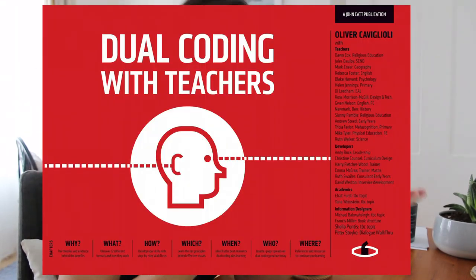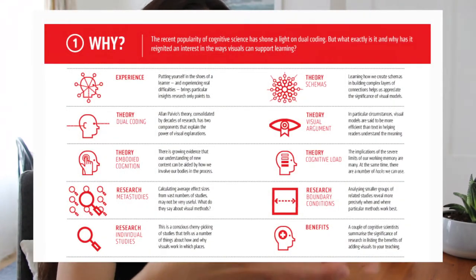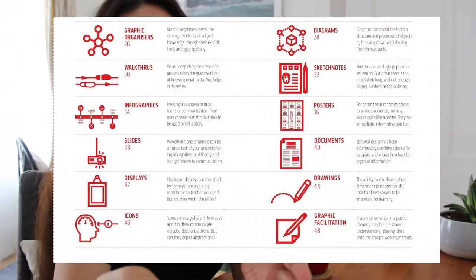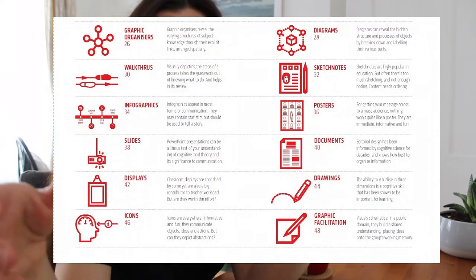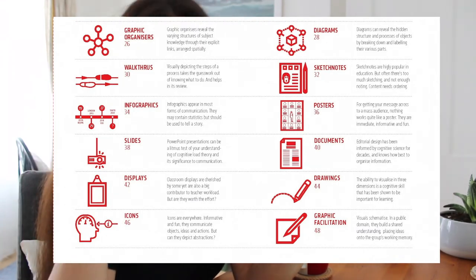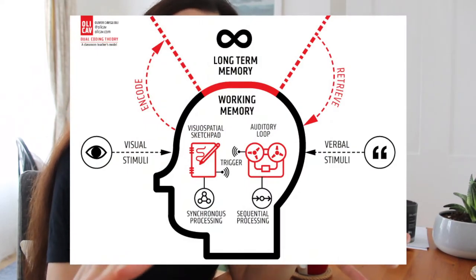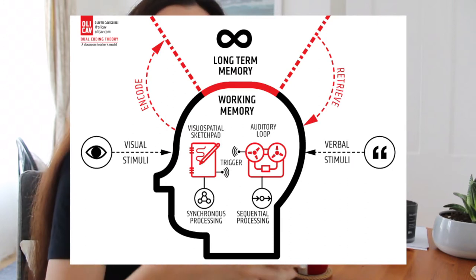If you don't know what dual coding is, it essentially means putting an image and text together so that students can learn more effectively, rather than separating those two. If you have an image on one slide and then move to the next slide to explain it with text, that overloads the cognitive memory and students might feel overwhelmed. Whereas if you embed the picture and text all in one, students are more likely to remember it because they use their visual memory. I try to figure out where there are opportunities to use it.